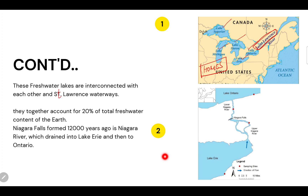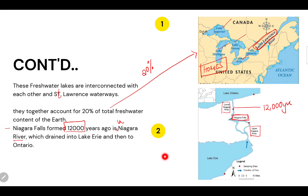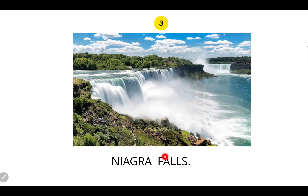These five lakes together give 20 percent of Earth's freshwater. Niagara Falls, formed about 2,000 years ago, is located on the Niagara River. The upper Niagara River drains first into Lake Erie and then into Lake Ontario. Niagara Falls is a very beautiful waterfall in the world and attracts many tourists.